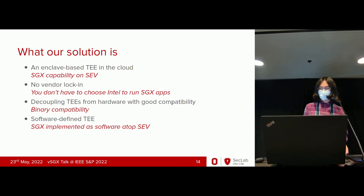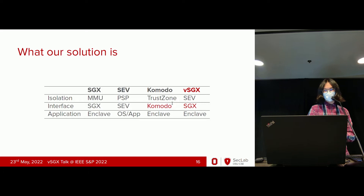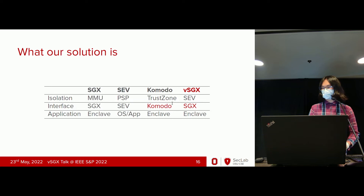Here's our solution: we bring SGX to SEV. So you don't have to choose Intel to run SGX apps. It has binary compatibility and we implement it using software. In the comparison table, for VSGX we have isolation based on top of SEV, but the interface is written in software and adapted to SGX — so you can just run SGX on it.